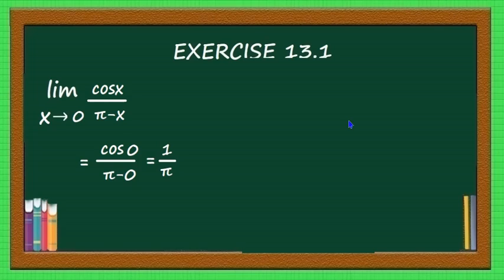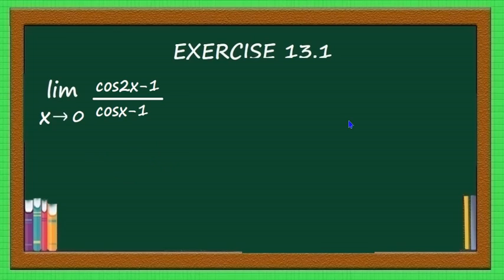If the expression is in indeterminate form, then only do you need to use special techniques to find the limit. Otherwise, whatever value you get by direct substitution is itself the limit of the function. Now see the next problem: limit x tending to 0 of (cos 2x - 1) divided by (cos x - 1).